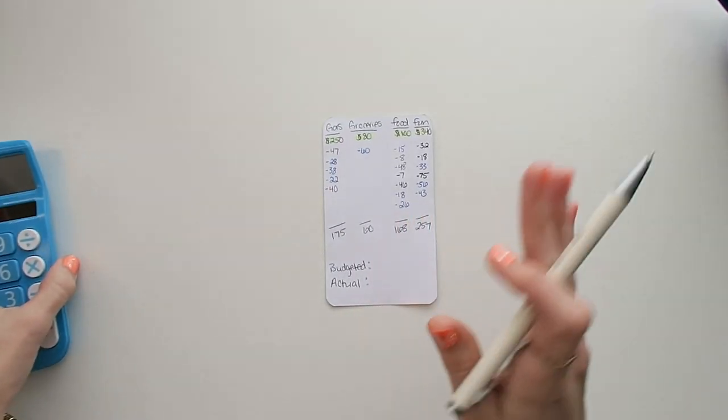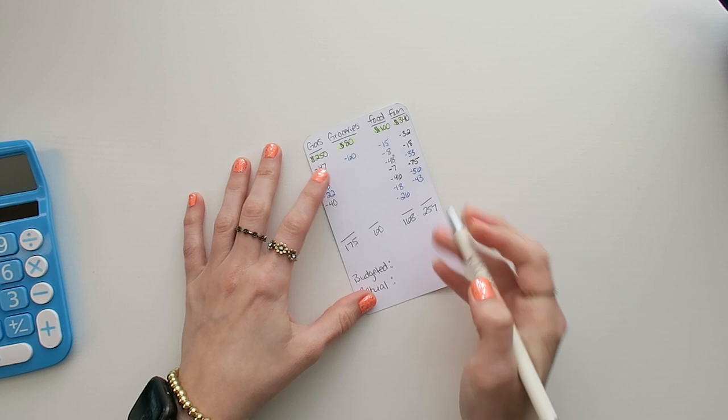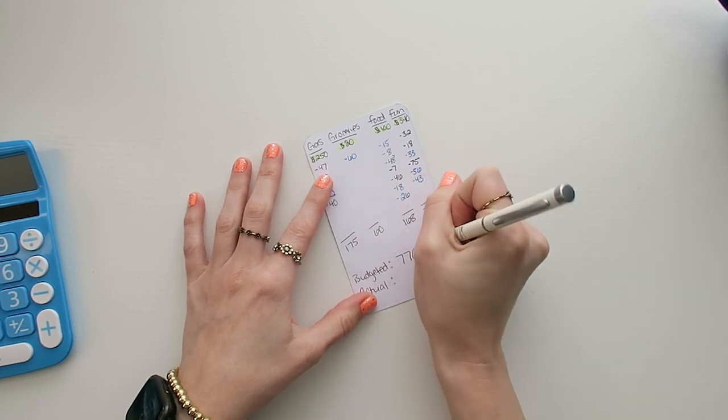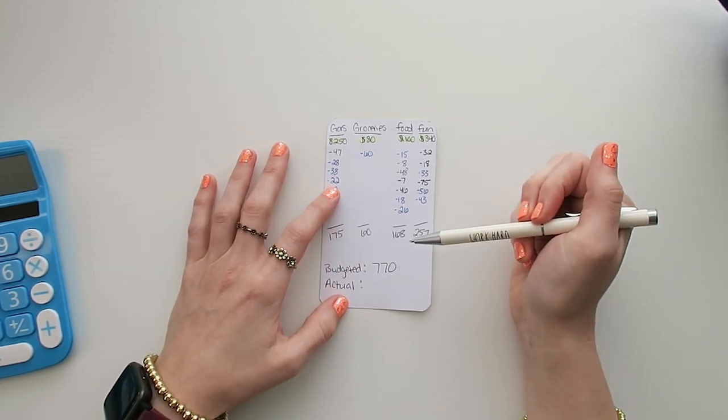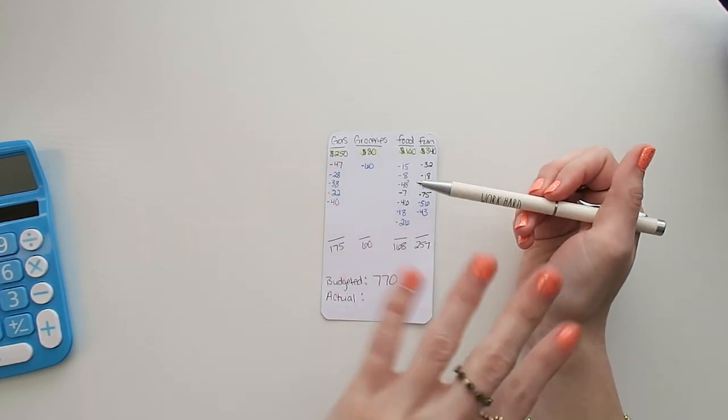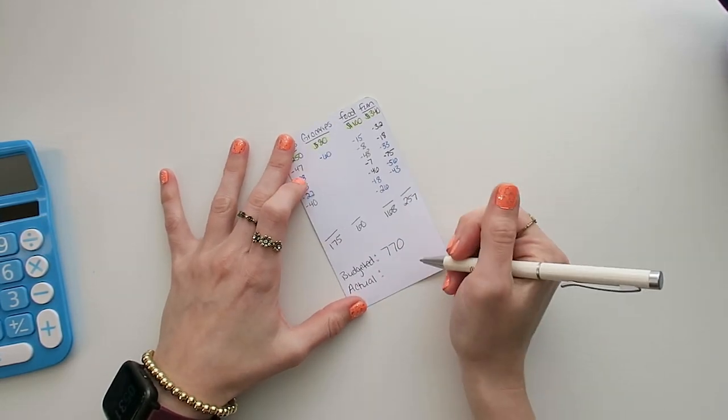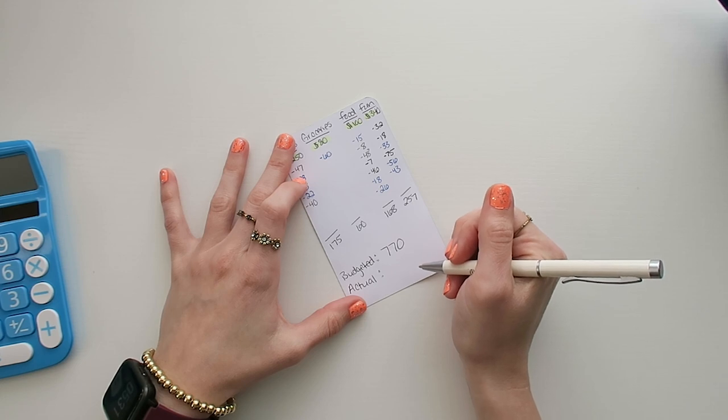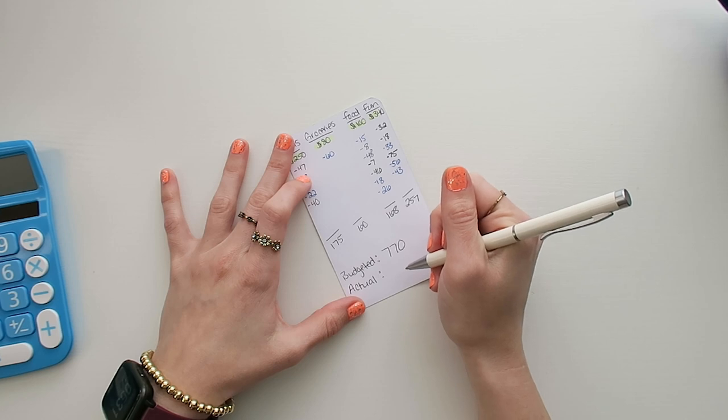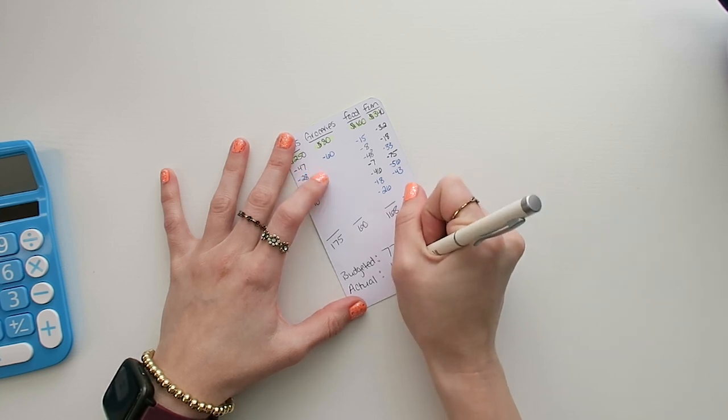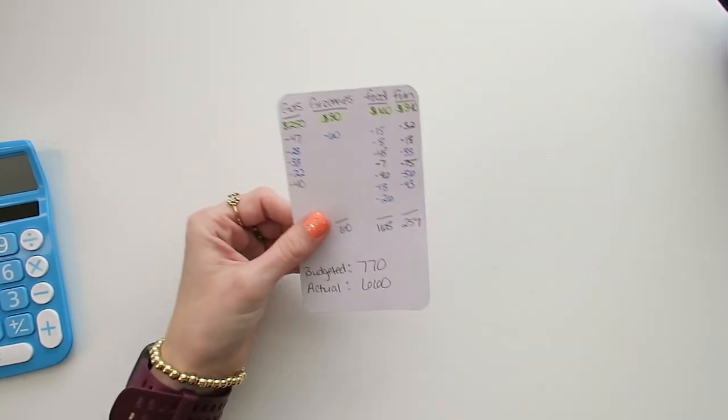For our budgeted amount, I expected to spend $770. Don't forget I did spend $1,000 on an Airbnb that I had already saved for, already paid for, so it's not in this budget. But total for our vacation to Nashville I spent $770, or $1,770 if you're counting that Airbnb. And then the actual amount was $660, so we were able to stay under the budgeted amount.